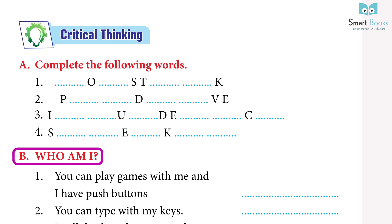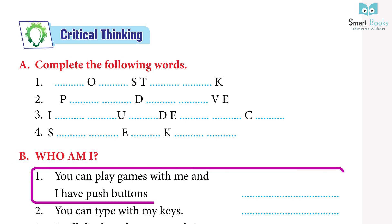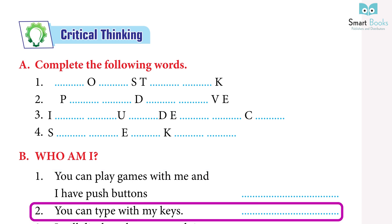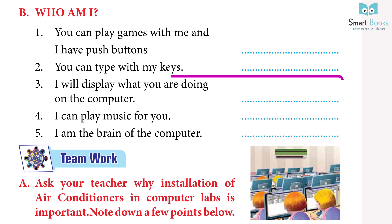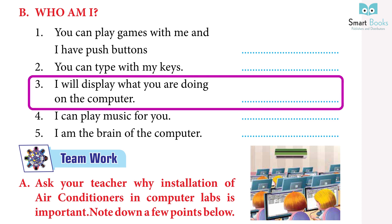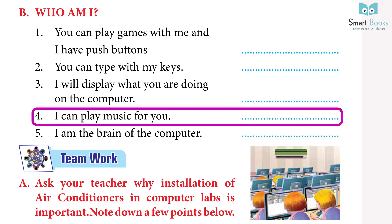B: who am I? 1. You can play games with me and I have push buttons — Answer: Joystick. 2. You can type with my keys — Answer: Keyboard. 3. I will display what you are doing on the computer — Answer: Monitor. 4. I can play music for you — Answer: Speaker.